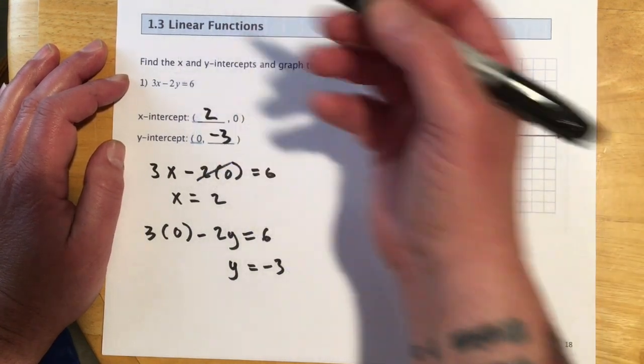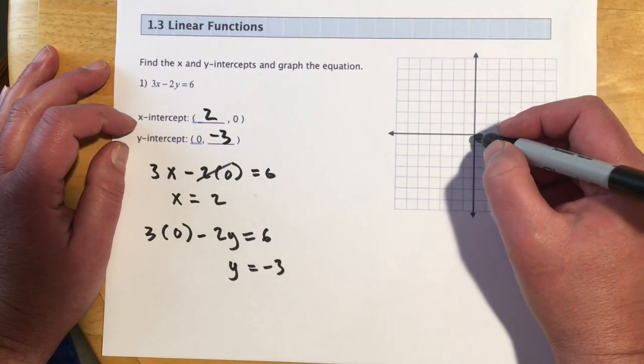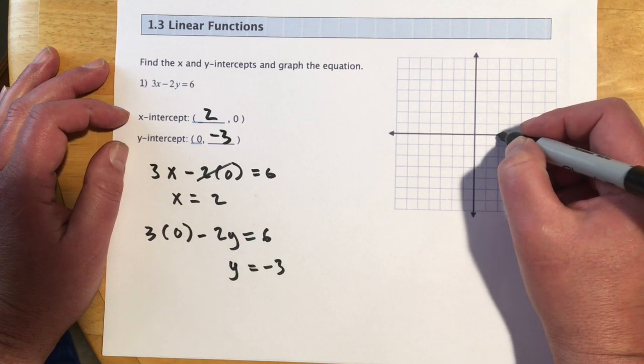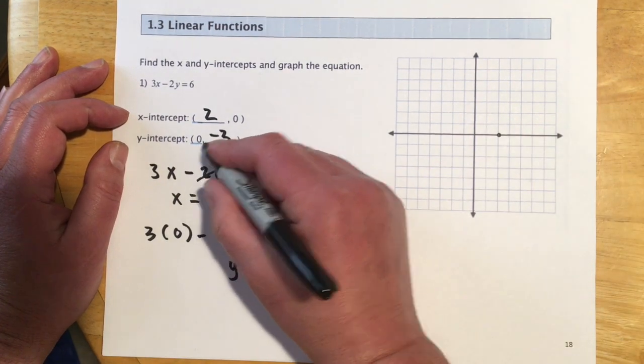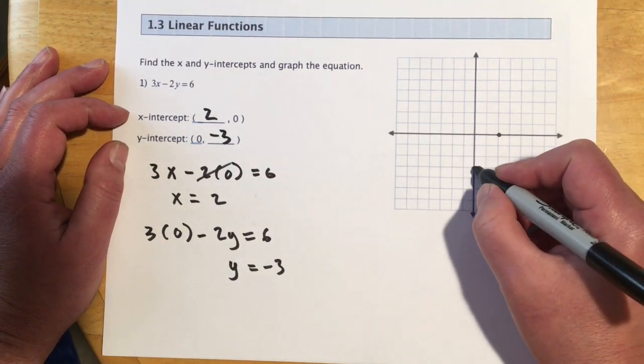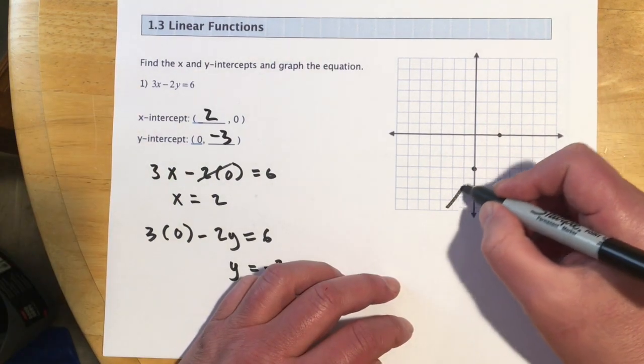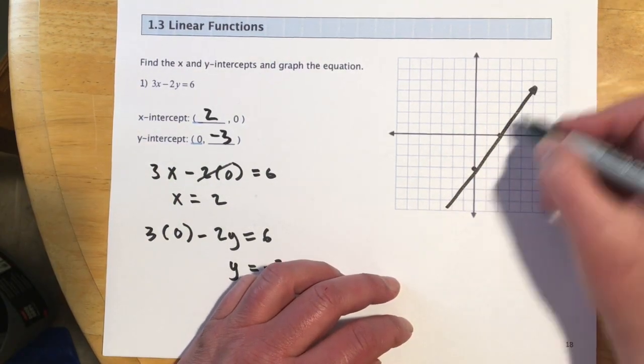Sometimes this number's terrible, but sometimes it works. So here when x is 2, y is 0. And here when x is 0, y is negative 3. So we get something that looks kind of like that.